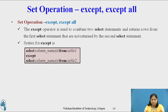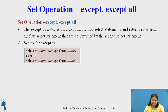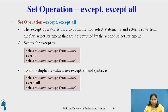Set operation Except and Except All. The Except operator is used to combine two SELECT statements and return the rows from the first SELECT statement that are not returned by the second SELECT statement. The Except clause produces distinct values in the result set, and to fetch duplicate values too, Except All must be used. The syntax for Except All is: SELECT COLUMN_NAME FROM TABLE1 EXCEPT ALL SELECT COLUMN_NAME FROM TABLE2.